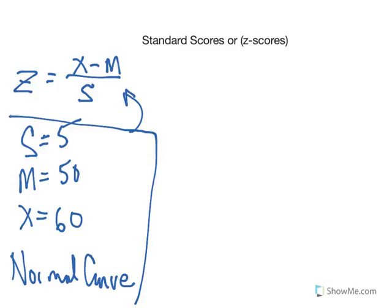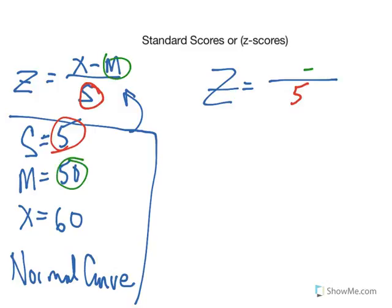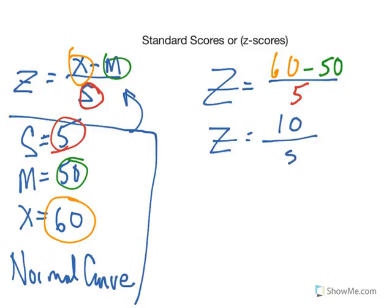So let's just go ahead and plug these things in. So we have the standard deviation is given to us. The mean is given to us. The x value is given to us. So 60 minus 50 then gives you z-score is equal to 10 divided by 5. So your z-score is 2. Pretty simple.